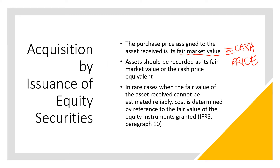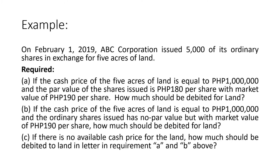In case the cash price equivalents are not provided in the problem, that is the only time we refer to the fair market value of the shares of stocks. In rare cases, when the fair market value of the assets received cannot be estimated reliably, the cost is determined by reference to the fair value of the equity instruments granted. So if the fair market value of the assets or the cash price equivalent is not given or determinable, that is the time we refer to the fair market value of the shares of stocks.